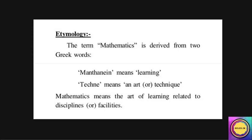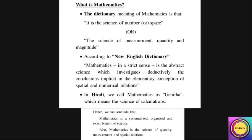यहाँ पर हम देखते हैं कि जो mathematics word है वो derive किया गया है Greek word से — 'Mathening' जिसको कहते हैं learning, और 'Technic' जिसको कहते हैं technique। Mathematics overall क्या हुआ — एक ऐसी art of learning which is related to disciplines and faculties। यह बहुत अच्छा point है, इसको आप अपने exam sheet में ज़रूर लिखें।